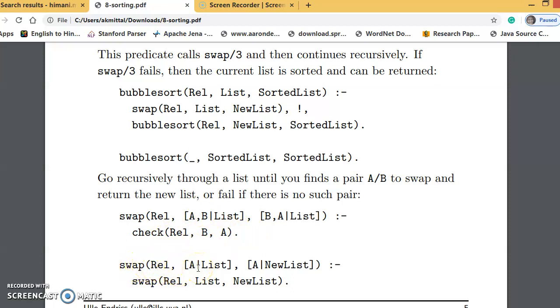Therefore, we copy the first element as it is, and then with the remaining list, we call swap again recursively so that for the remaining elements, it can check if the order is correct. If the order is correct, it will keep on calling itself recursively; otherwise, it will reorder the elements.